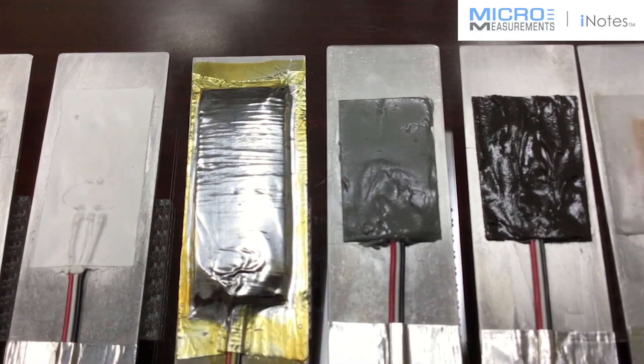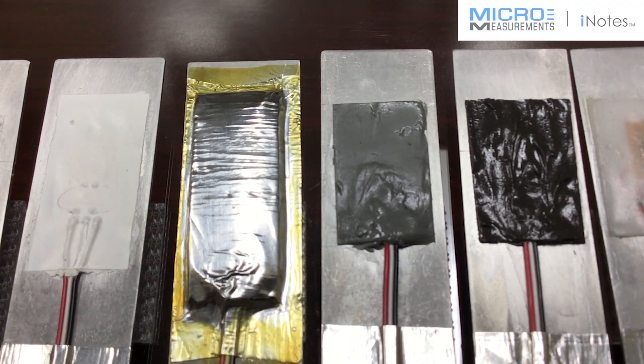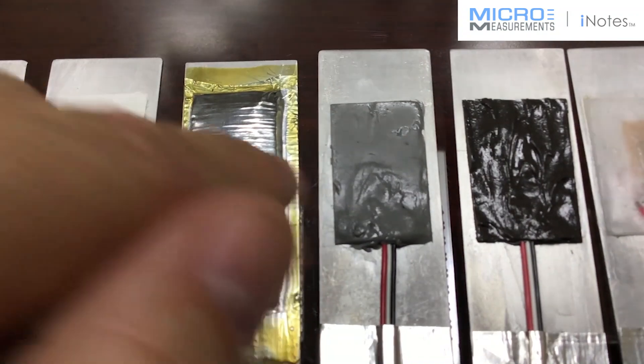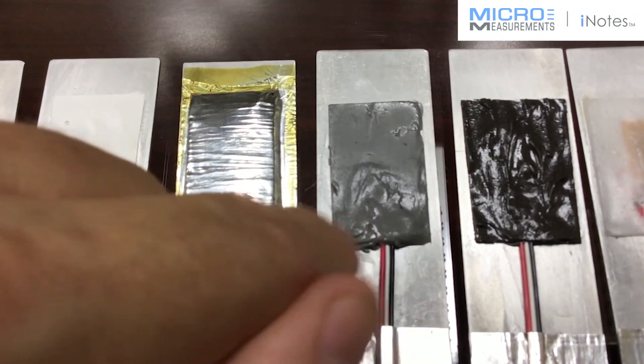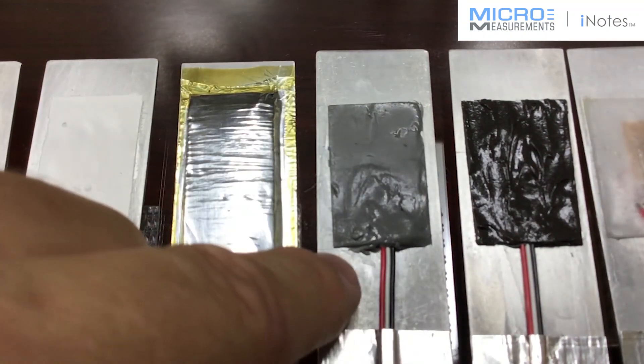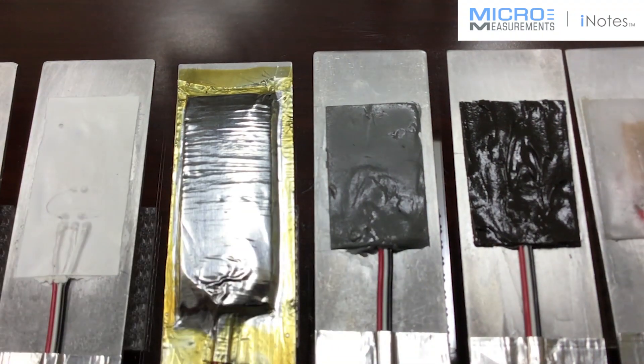So if you're protecting a strain gauge based load cell and you're looking for something that won't stiffen the structure, this is a pretty good coating to choose. Oftentimes our customers will put this on and then they'll apply something else over the top of it just to help give it better mechanical protection, but from a moisture protection standpoint it's really good.